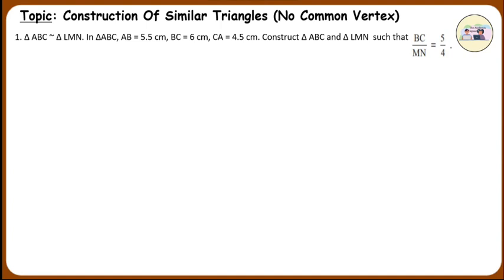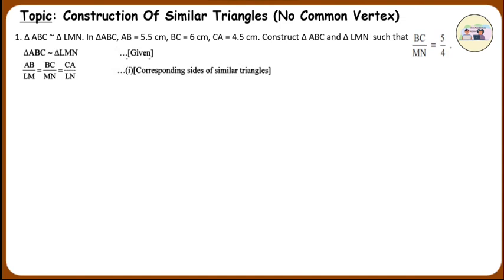Analysis: Triangle ABC is similar to triangle LMN — given. So, AB upon LM is equal to BC upon MN is equal to CA upon LN, by corresponding sides of similar triangles. But BC upon MN is equal to 5 upon 4, which is given.